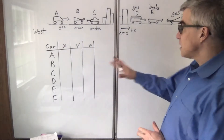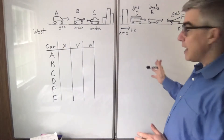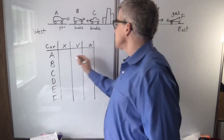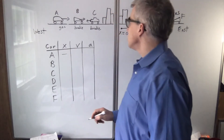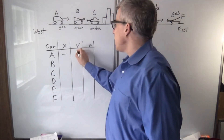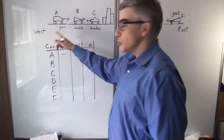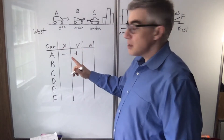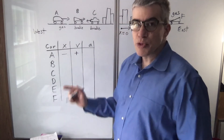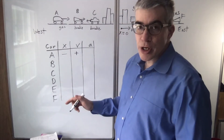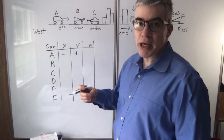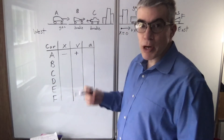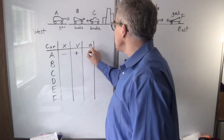Our goal is just to get the sign straight for x, v, and a. So for car a, the x is negative because we're in the west. The velocity is positive because we're driving east. And the acceleration — this is subtle — we're hitting the gas, which means that v and a will match. If the v is negative, the gas will make it more negative. If the v is positive, the gas will make it more positive. So the acceleration is positive.